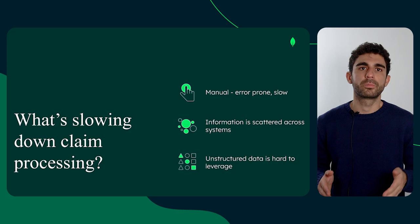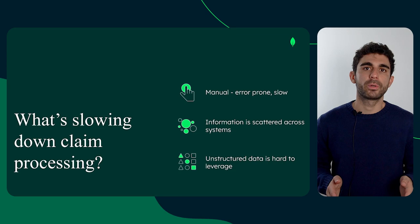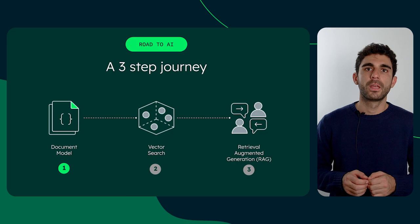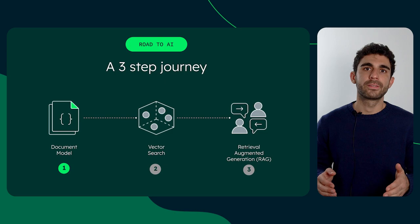Today, we'll see how MongoDB helps insurance companies speed up the process thanks to Atlas Vector Search. Claim adjustment can be streamlined in three steps, with a growing level of complexity and delivering value at each step of the journey: leveraging the document model, adopting vector search, and lastly by building a retrieval augmented generation system, or RAG in brief.